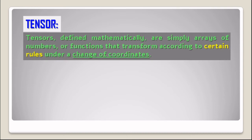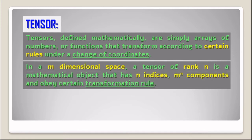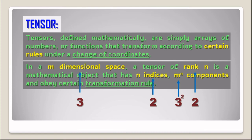Tensors, defined mathematically, are simply arrays of numbers or functions that transform according to certain rules under a change of coordinates. In an m-dimensional space, a tensor of rank n is a mathematical object that has n indices, m^n components, and obeys certain transformation rules. Here rank and dimension are two important things. For a three-dimensional system of rank 2, the number of indices is 2 and the number of components is 3² = 9, and they obey certain transformation rules.